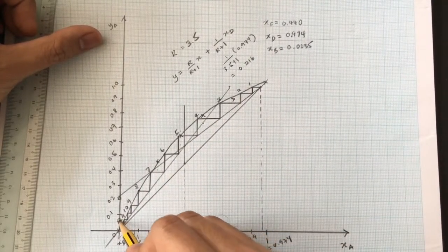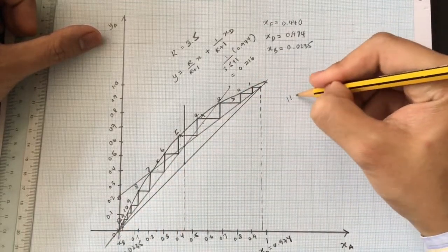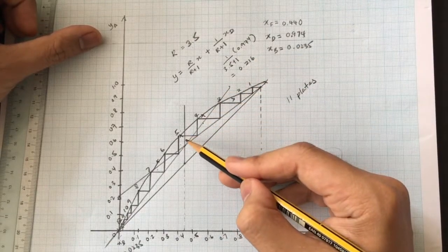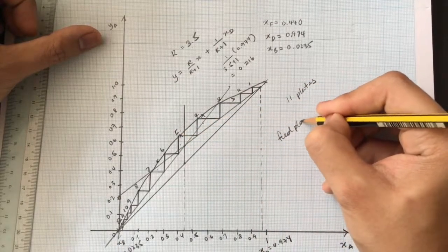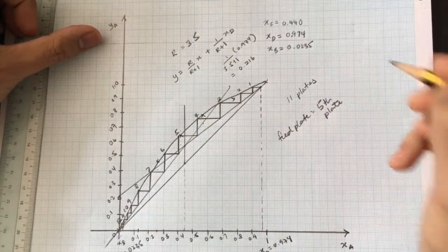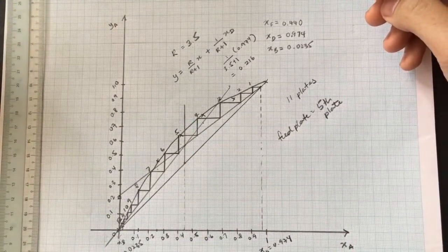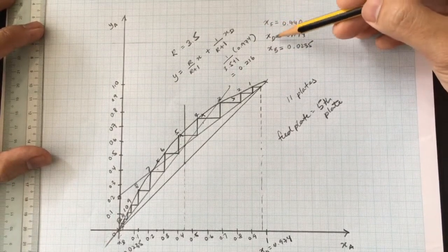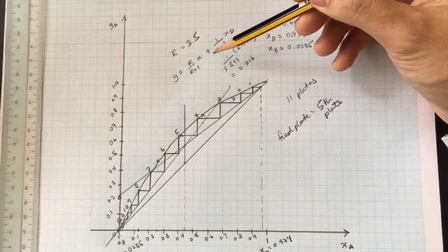We disregard the last step because that corresponds to the reboiler. Therefore, the number of plates in this distillation column is 11 plates, and the feed plate should be located at the fifth plate. Using this McCabe-Thiele method, we can determine the number of plates in a distillation column given the mole fractions of the components and the reflux ratio value. That's the end of this video — thank you, and I'll see you in the next one.